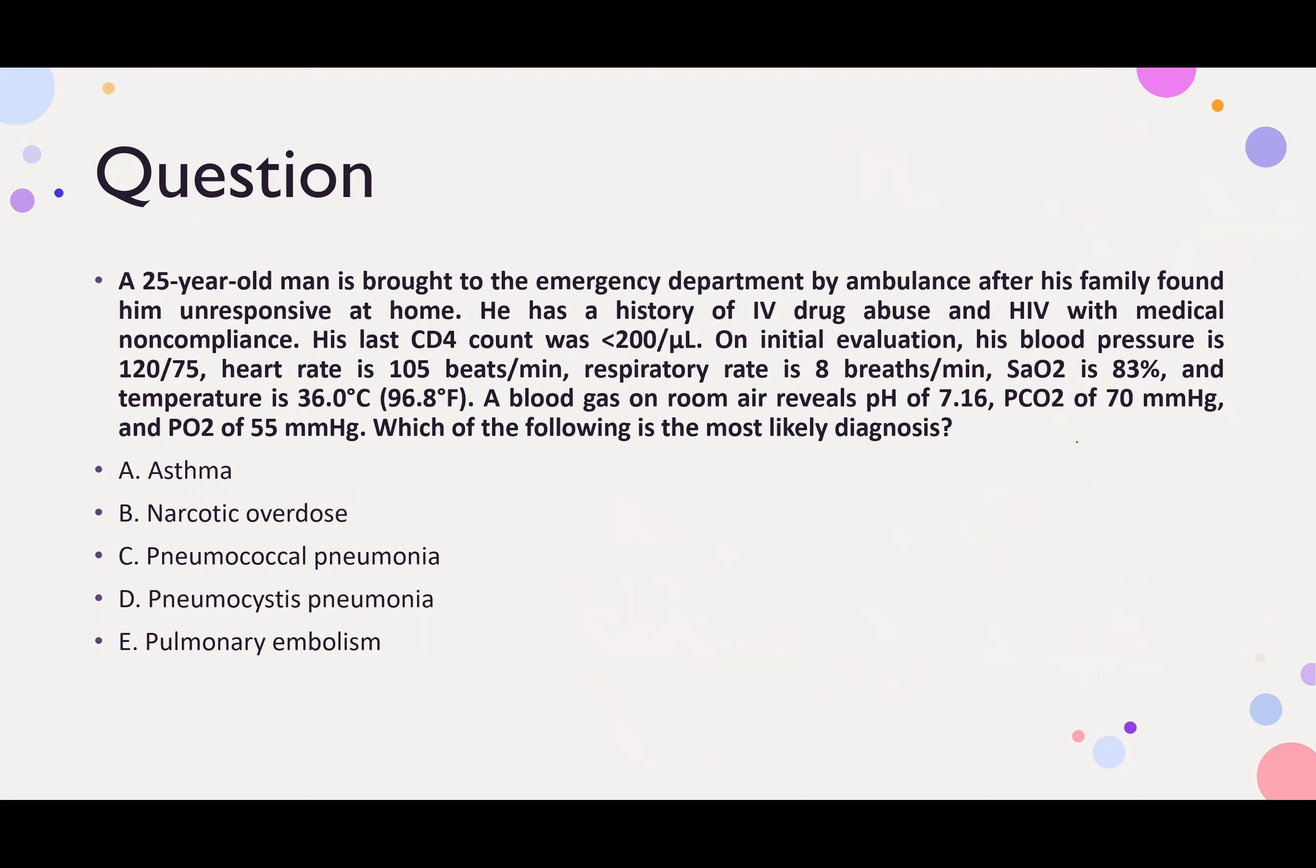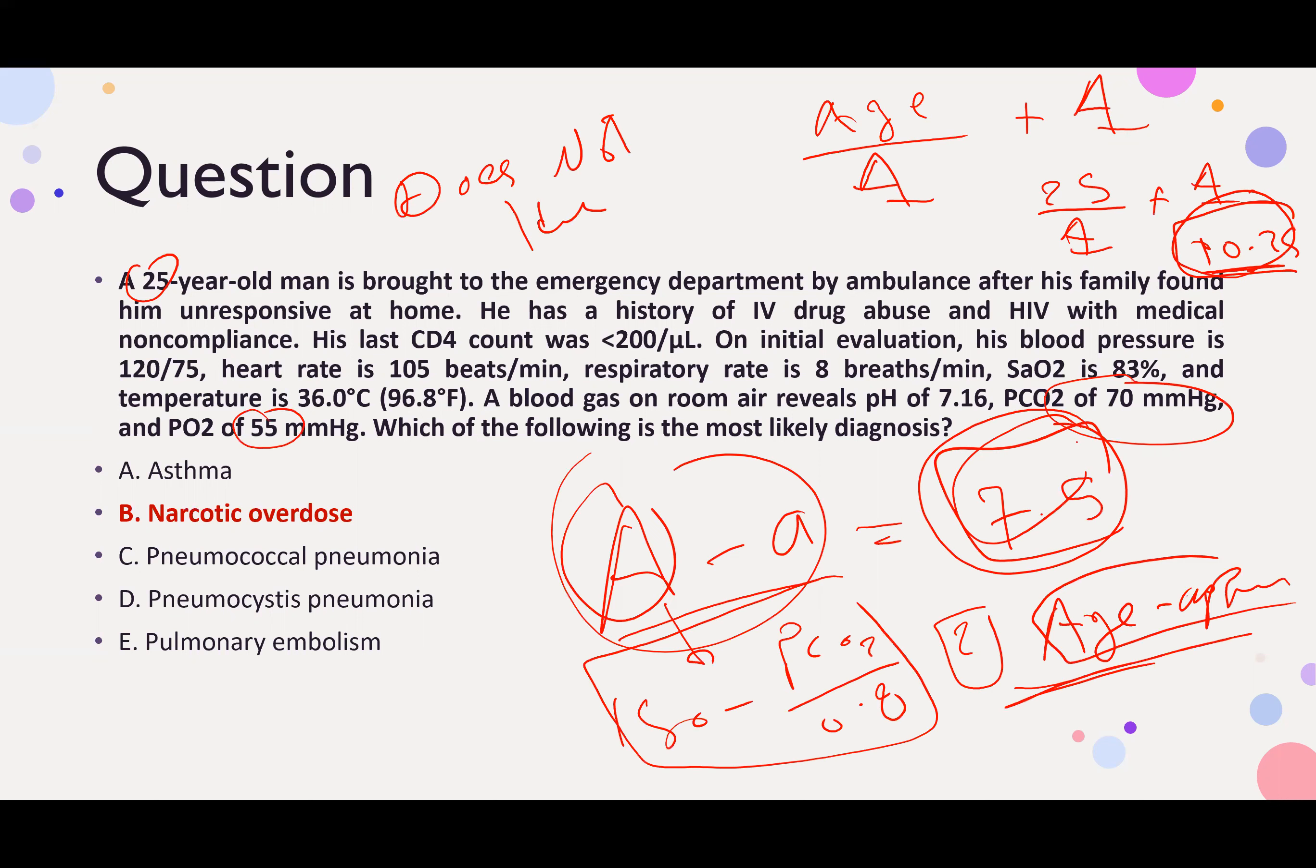So the differential that we talked about at the time, which is diffusion, a problem with the diffusion or a problem with the shunting or a problem with the VQ mismatch, is not there. Why? Because the patient's measured AA gradient is low.